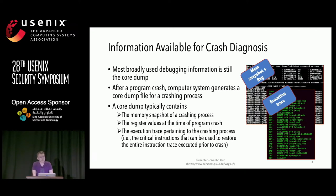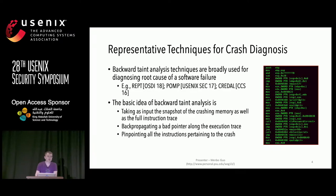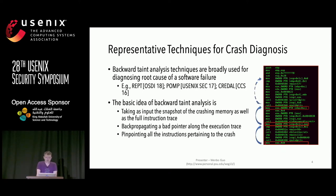Recently, the development of new hardware gives us the capability to trace program execution. Therefore, a call dump also contains the execution trace pertaining to the crash process. Using the call dump, diagnosis tools usually utilize backward taint analysis to pinpoint the root cause of a software failure. The basic idea of backward taint takes as input the information contained in the call dump. Then, starting from a bad pointer, it will reverse the search along the execution trace and pinpoint all the instructions pertaining to the crash.